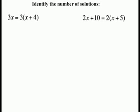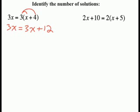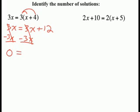Now we identify the number of solutions in the following equations. For 3x equals 3 times the quantity x plus 4, we distribute the 3 on the right side: 3 times x is 3x and 3 times 4 is 12. So 3x equals 3x plus 12. Subtracting 3x from both sides leaves 0 equals 12. Since this is not a true statement, there are no solutions.